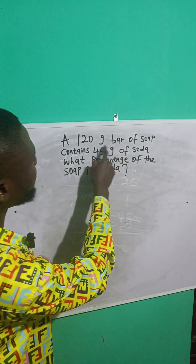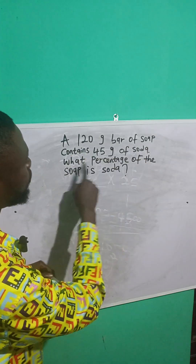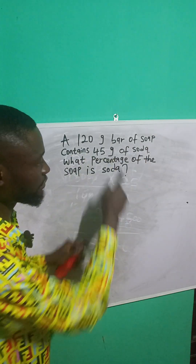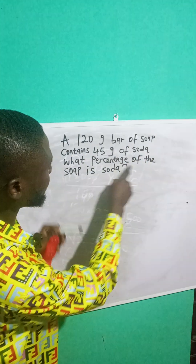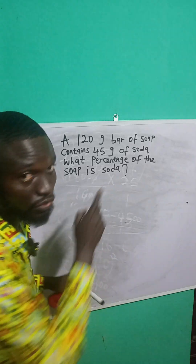It says a 120 gram bar of soap contains 45 grams of soda. What percentage of the soap is soda?